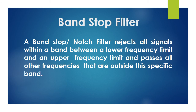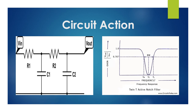The second type is the band-stop filter, also called a Notch filter. A band-stop filter rejects all signals within a band between a lower and upper frequency limit and passes all other frequencies outside this specific band — this is the reverse effect of a band-pass filter. Looking at the circuit and graph, it consists of a low-pass filter connected with a high-pass filter, and these two are combined to form the band-stop filter.